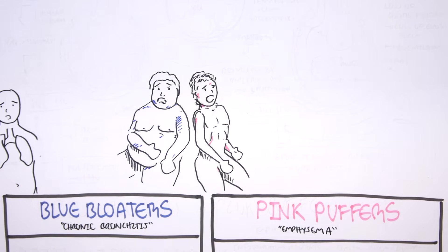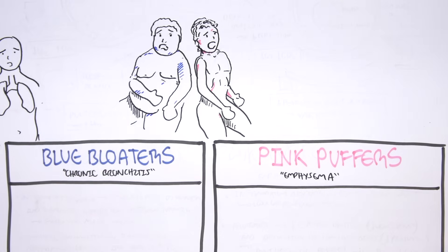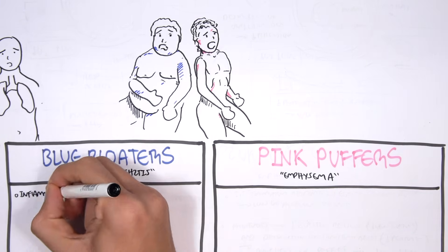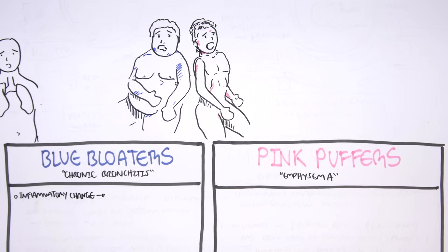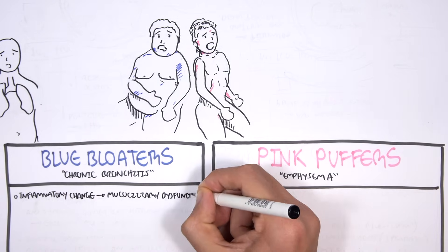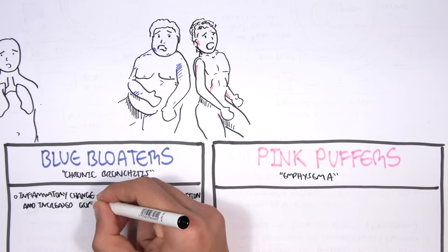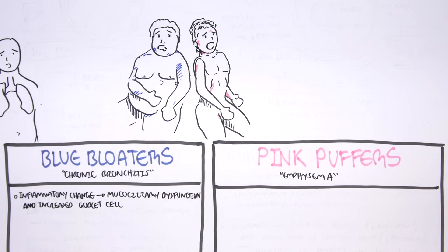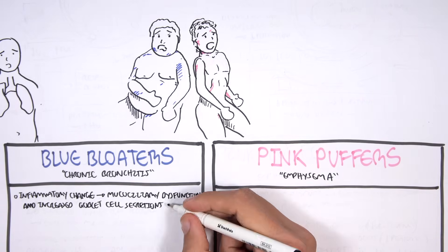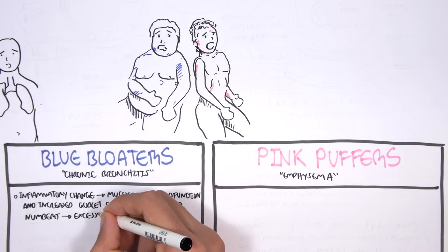Beginning by looking first at the blue bloaters. The blue bloaters are patients that look very cyanosed blue, bloaters possibly potentially due to the dyspnea, severe dyspnea and lack of exercise. In chronic bronchitis, you have inflammatory change leading to mucociliary dysfunction and increased goblet cell secretion and numbers, which leads to excessive mucus production.